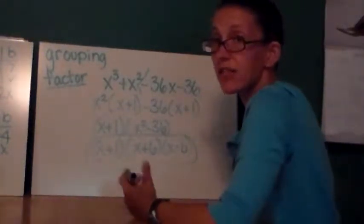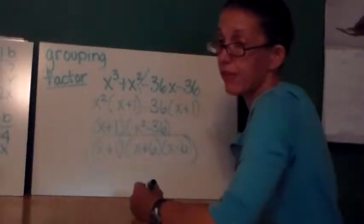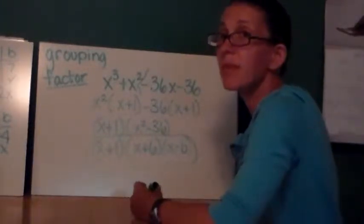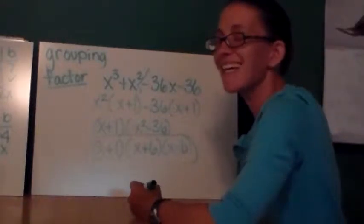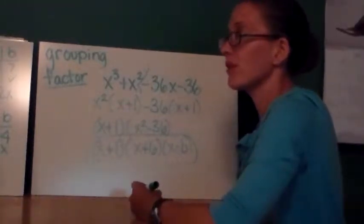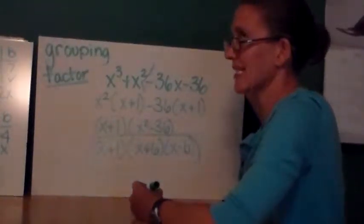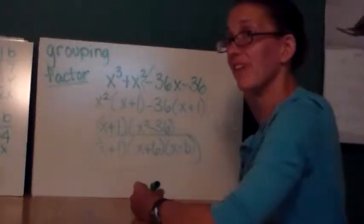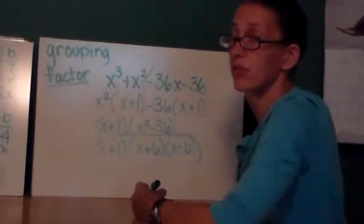Sometimes, with factoring by grouping, you'll get something here that cannot be factored any further. That's okay. Sometimes, with greatest common factor, you'll get something that can't be factored any further. Sometimes, this happens, but a lot of times, and especially in math practice sheets, it doesn't. So, you shouldn't get a worksheet that says, for 19 out of 20 problems, it can't be factored. That just means you didn't try hard enough.